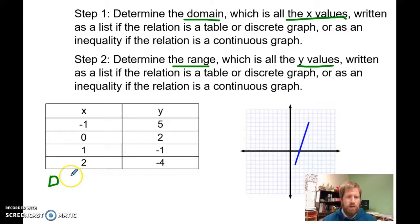negative 1, 0, 1, and 2. And my range is going to be 5, 2, negative 1, and negative 4. Okay, that simple.